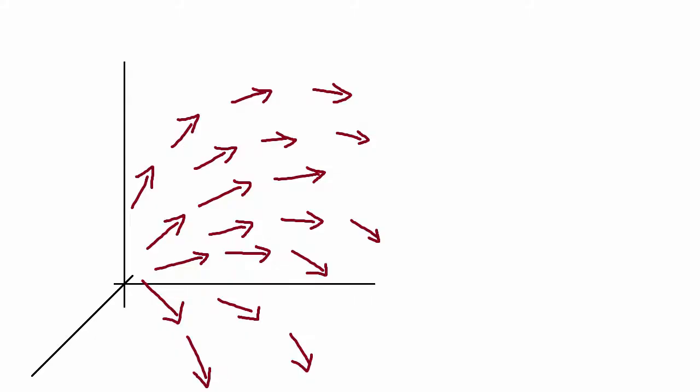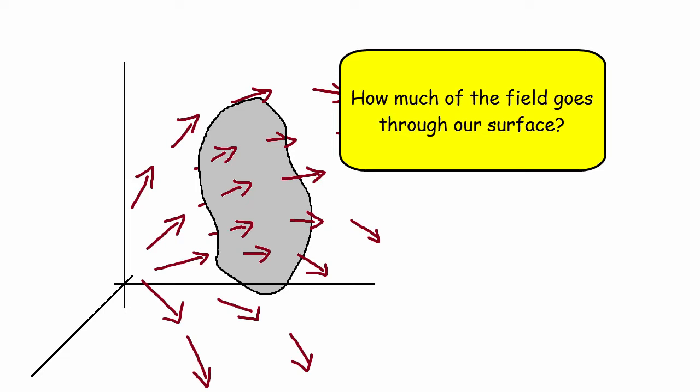I'll probably be using the words vector fields and vector functions almost interchangeably — they mean the same thing. When you start looking at vector fields, there are a couple of things you might want to calculate. One of them is how much of this field passes through a certain area. The amount of flow through the area — very roughly, how much of these vectors or field lines goes through it — is a concept called flux.